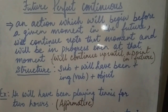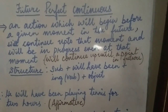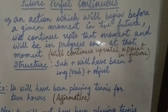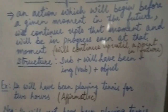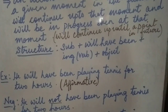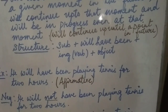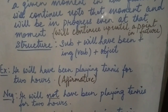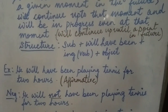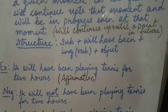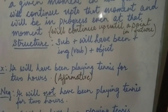The structure of the sentence will be: subject plus will have been plus the ing form of the verb plus object. See the structure very carefully. For the affirmative sentence: He will have been playing tennis for two hours. Notice the structure — will have been are the auxiliary verbs, followed by the ing form of the main verb, then the object.